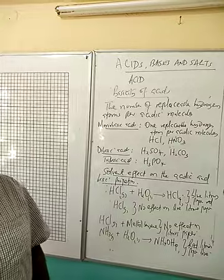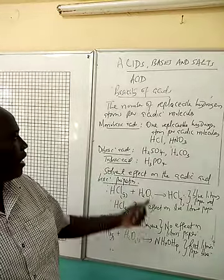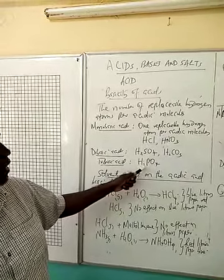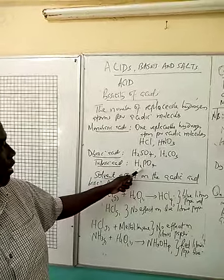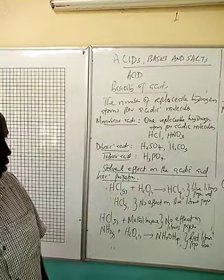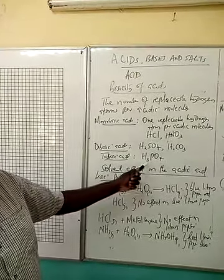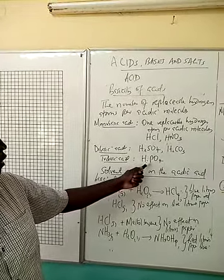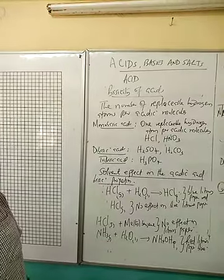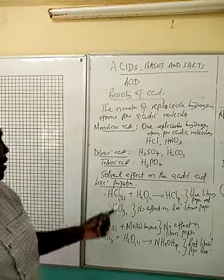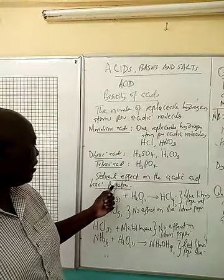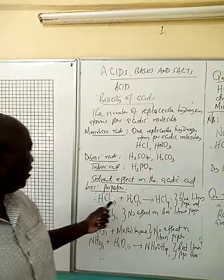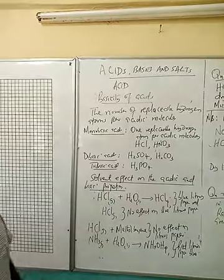We have got tribasic acids. These are acids which have got three replaceable hydrogen atoms per acidic molecule. An example is phosphoric acid. So let us look at the solvent effect on the acidic and basic properties.